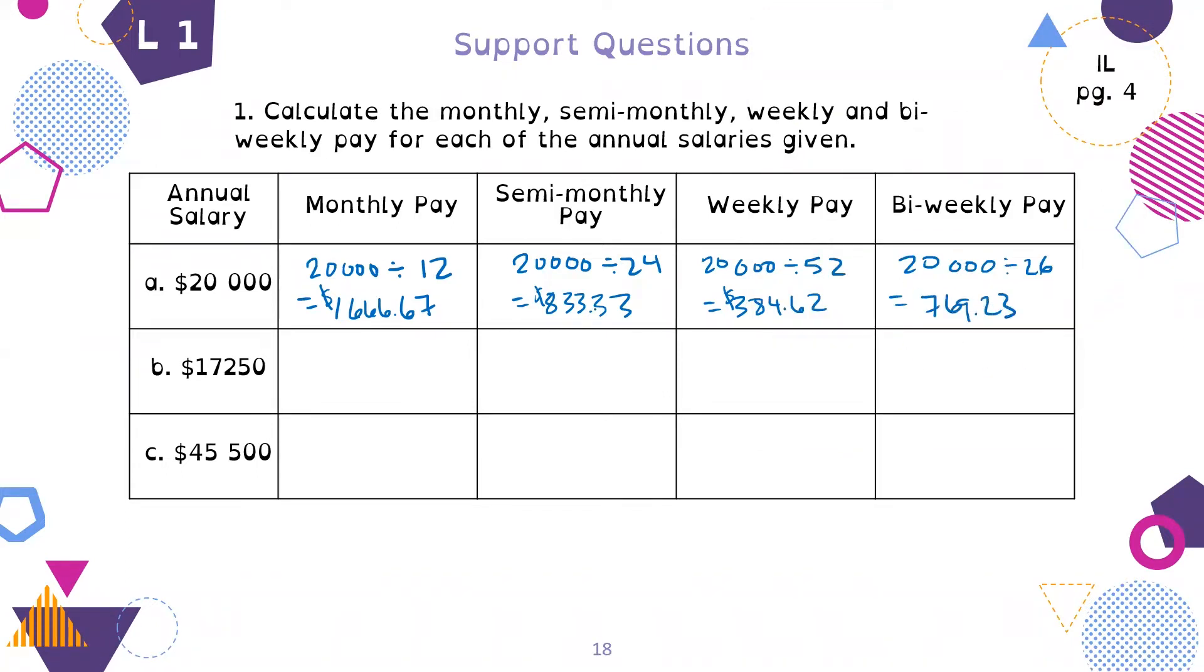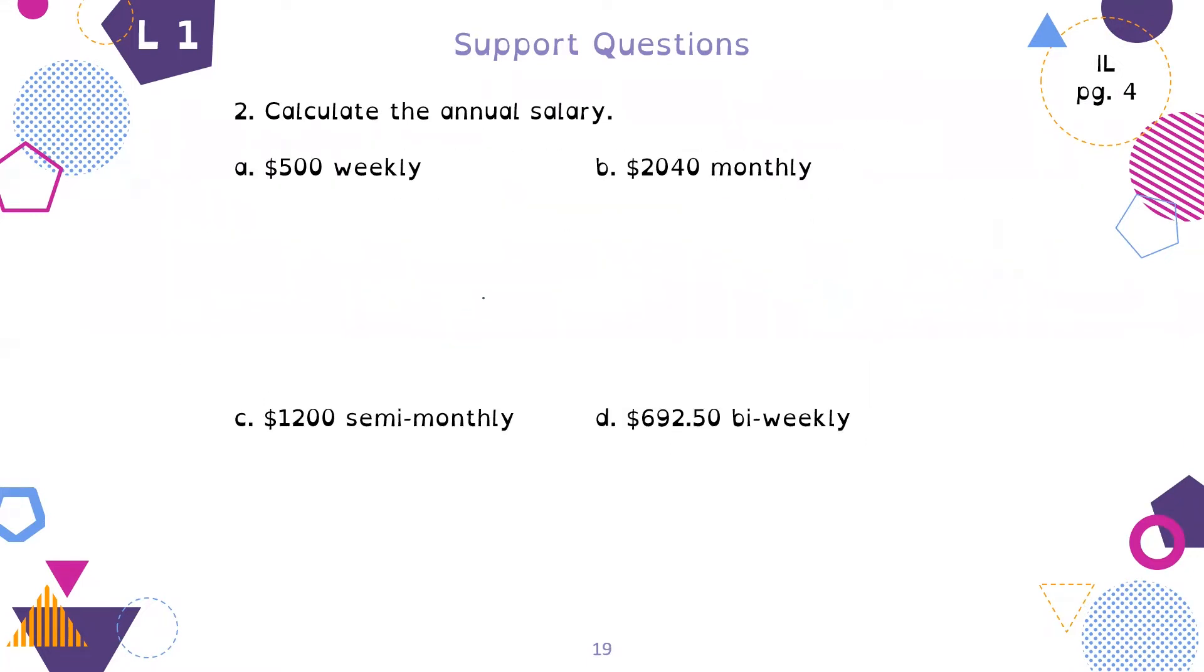Weekly is not an even distribution of monthly or semi-monthly. There are 52 weeks in a year, so we divide 20,000 by 52. That's $384.62. And bi-weekly is 20,000 divided by 26, which is $769.23. This is all the same amount that you would get paid yearly, just broken up into different amounts depending on how often you get paid.